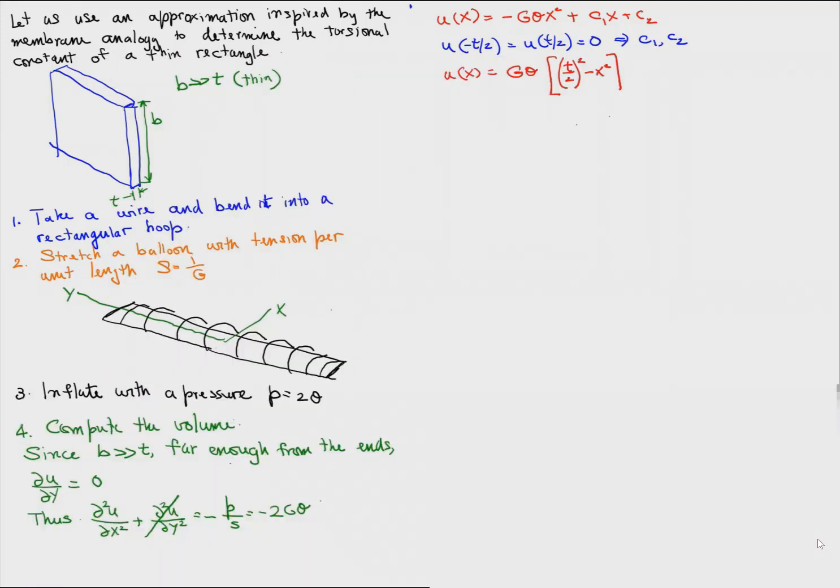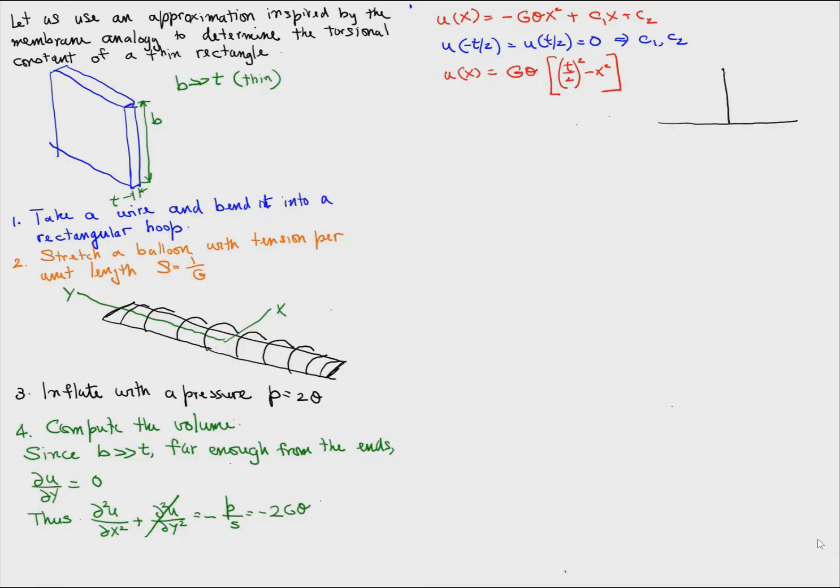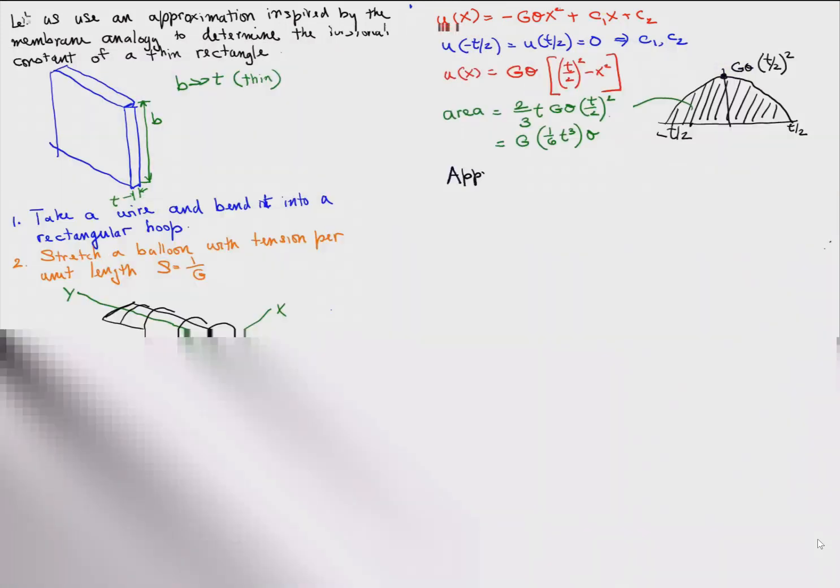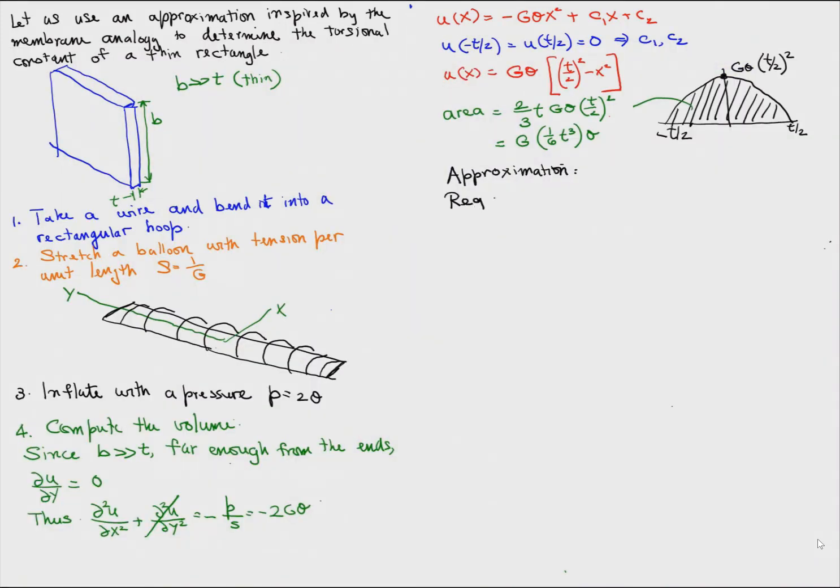Since there's only one independent variable, we can solve this easily. We see that the deflected shape far away from the ends is a parabola. We can calculate the area of the parabola as two-thirds of the area of the enclosing rectangle, which comes out to G times one-sixth T cubed times theta.